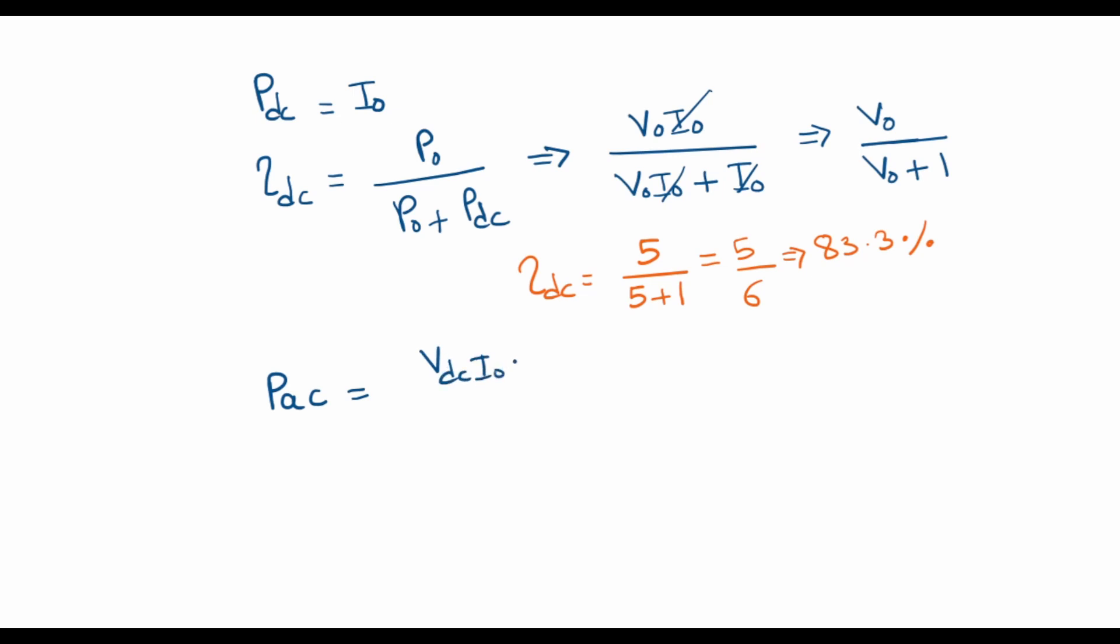VDC times I0 times TS divided by 3T. And now the total efficiency which includes AC as well as the DC power loss can be written as P0 divided by P0 plus PDC plus PAC.